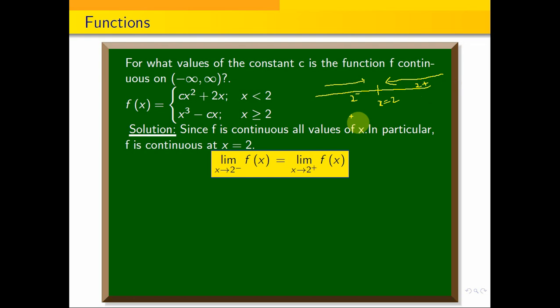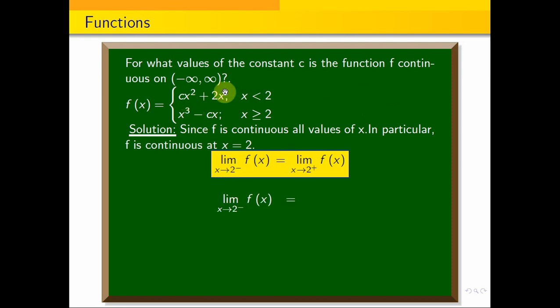The limit as x tends to 2 minus of f of x: this is the left hand side approach. The function value as x approaches 2 gives us x squared, so 2 squared is 4, giving us 4c plus 2. Then 2 squared is 4, so the left hand limit is 4c plus 4.